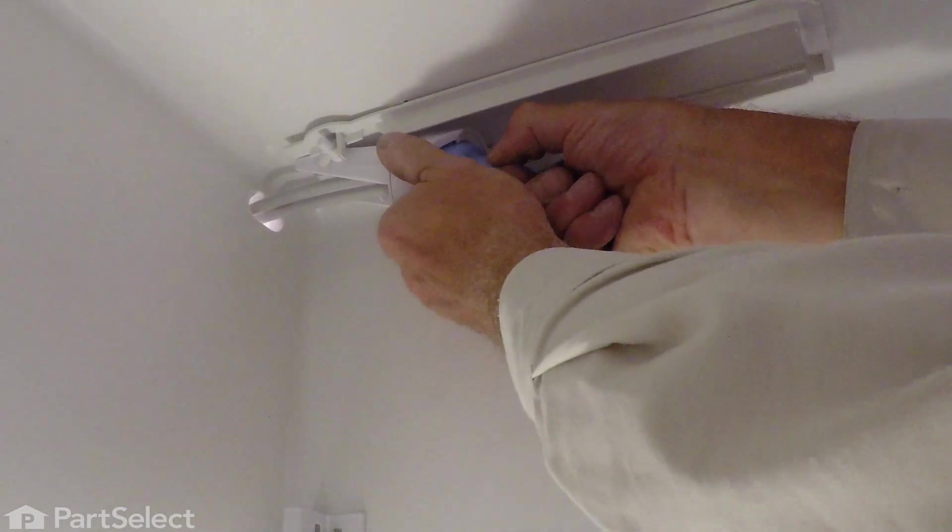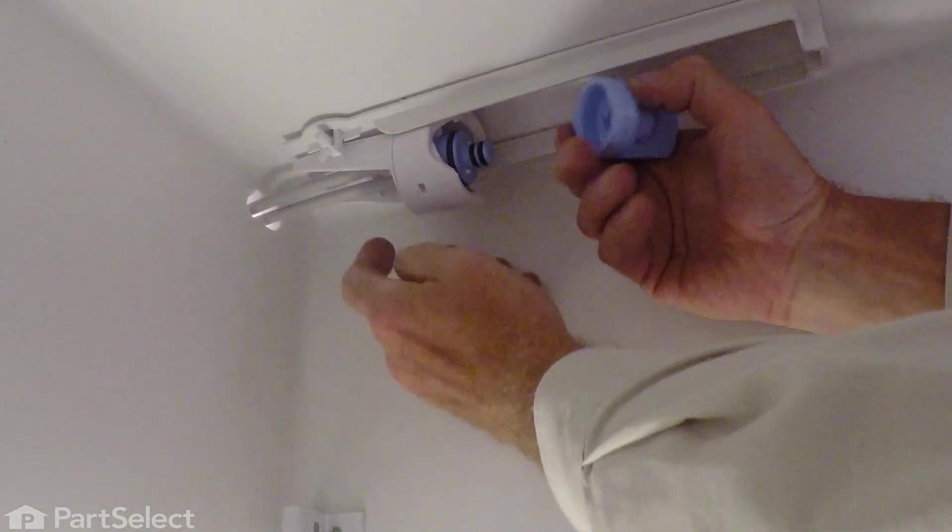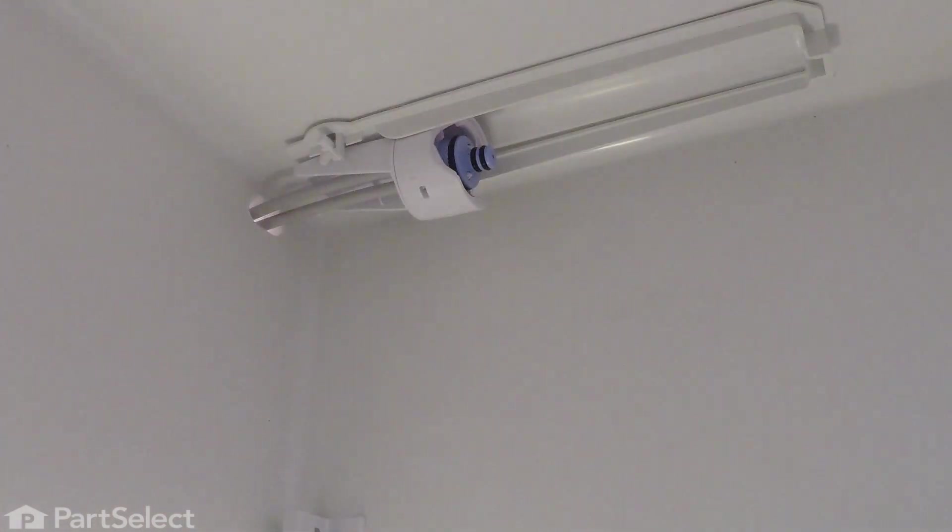We can then remove that bypass plug. Simply grasp the housing. Twist the plug out and retain that. Now, our next step will be to put the filter cover back on.